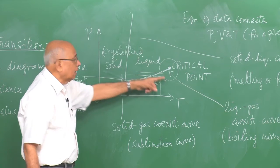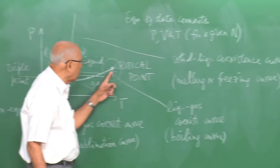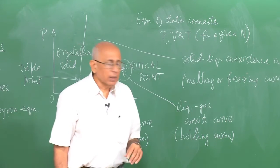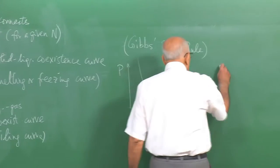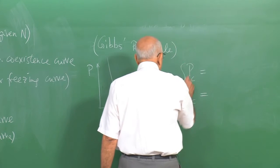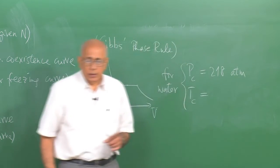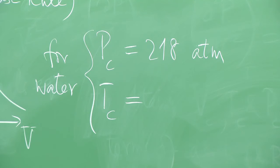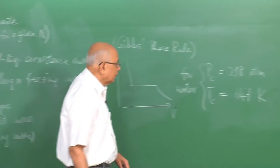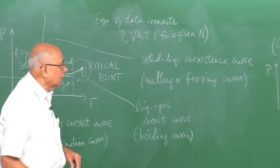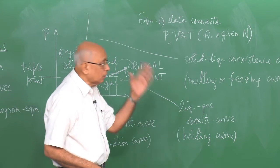For reference, in the case of water — the most common substance — the critical point is much higher than the normal boiling point at one atmosphere, which is 100°C or 373 K. The critical pressure Pc for water is of the order of 218 atmospheres, where one atmosphere is approximately 10⁵ Pascals. The critical temperature Tc is about 647 K, or approximately 374°C — very much higher than the normal boiling point and at 218 atmospheres rather than one atmosphere.